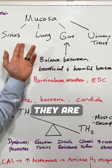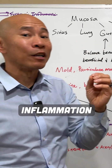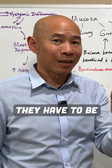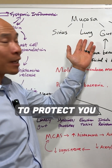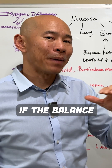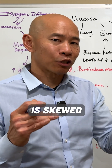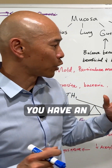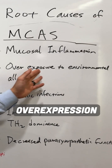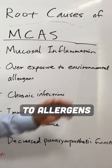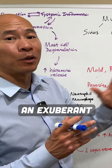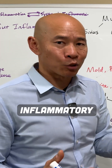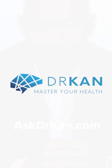Now, because they are inflammation factories — they have to be because they're there to protect you — if the balance is skewed to where you have an overexpression or overexposure to allergens, then you're going to have an exuberant inflammatory response.